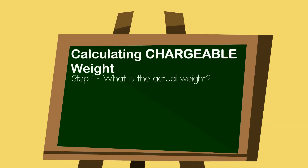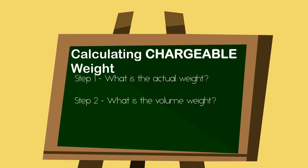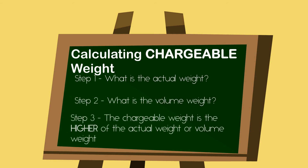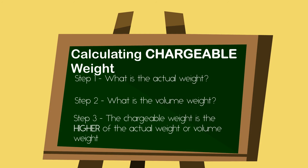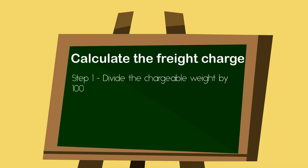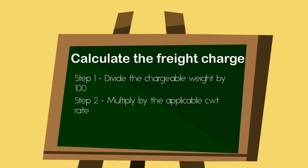Now you can determine the chargeable weight. You have the actual weight and the volume weight — the higher of the two is your chargeable weight. Once you have the freight rate, take the chargeable weight, multiply it by the freight rate, and divide it by 100. In Canadian trucking, all freight rates are per 100 pounds, so you must remember to divide by 100.